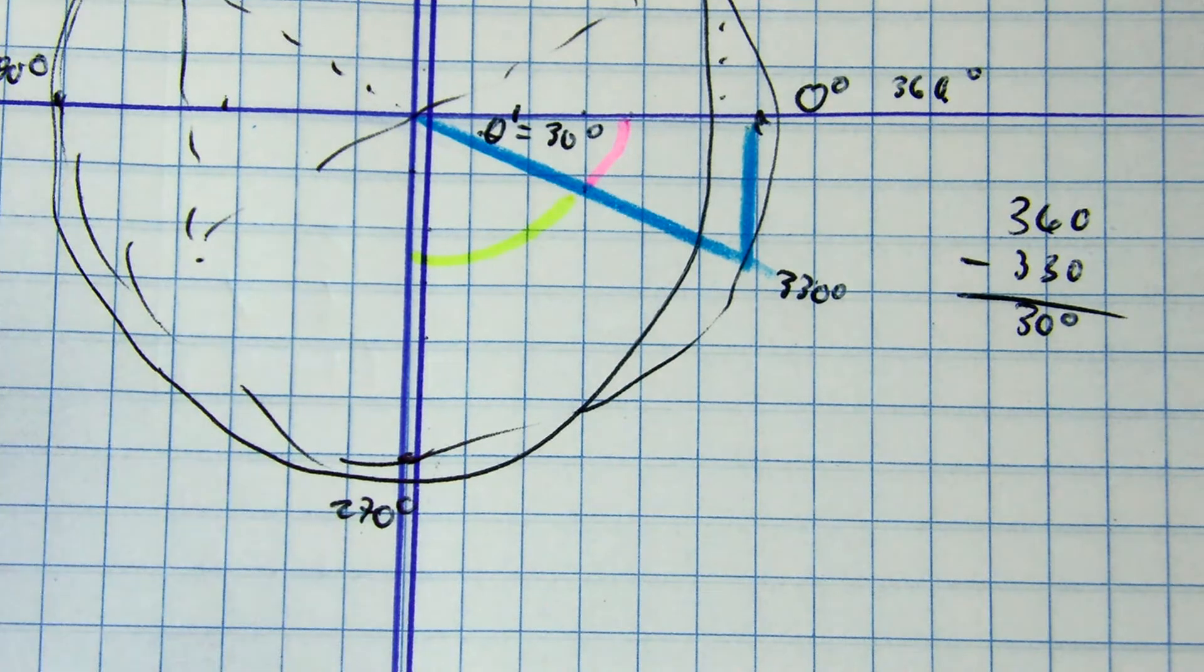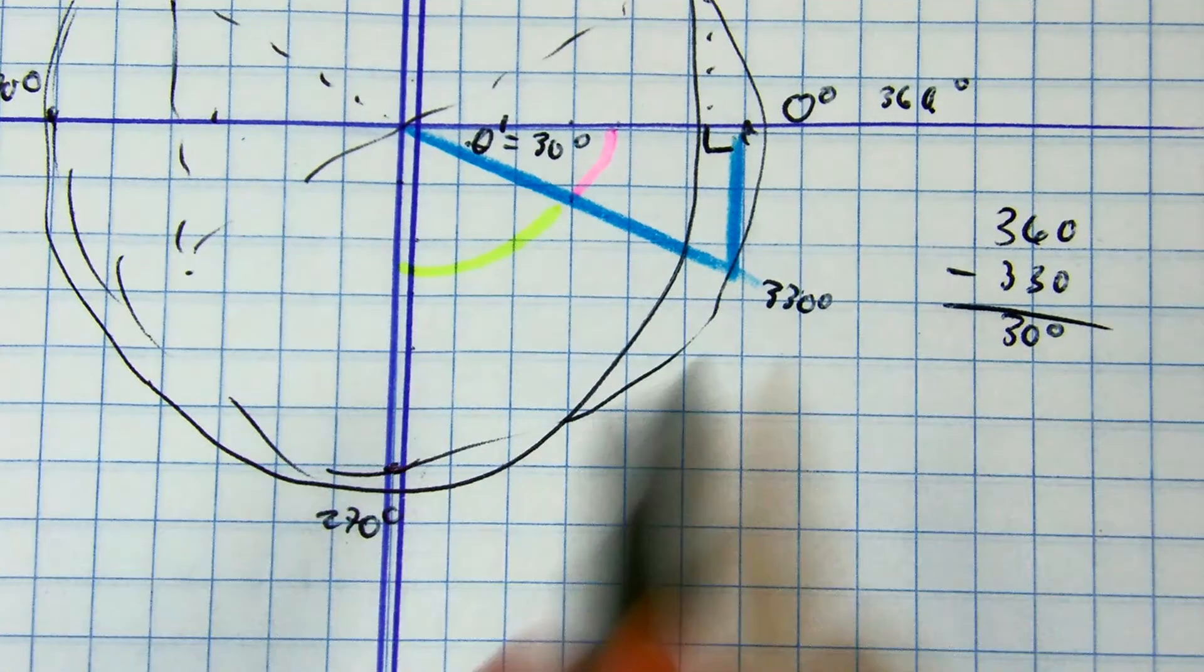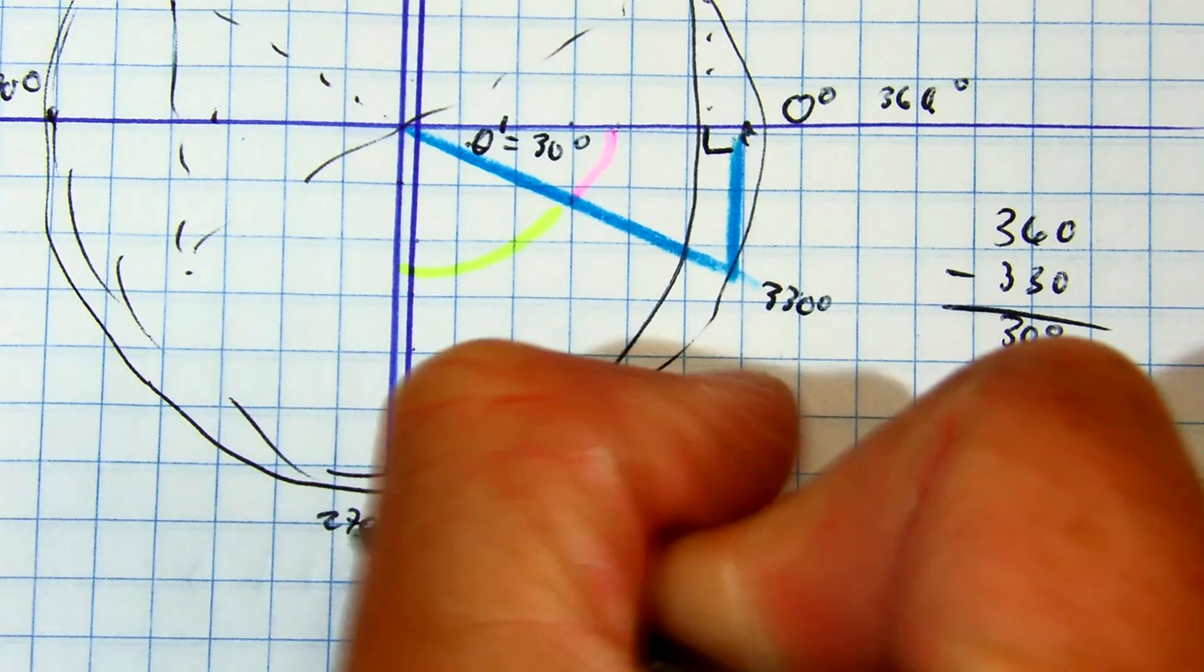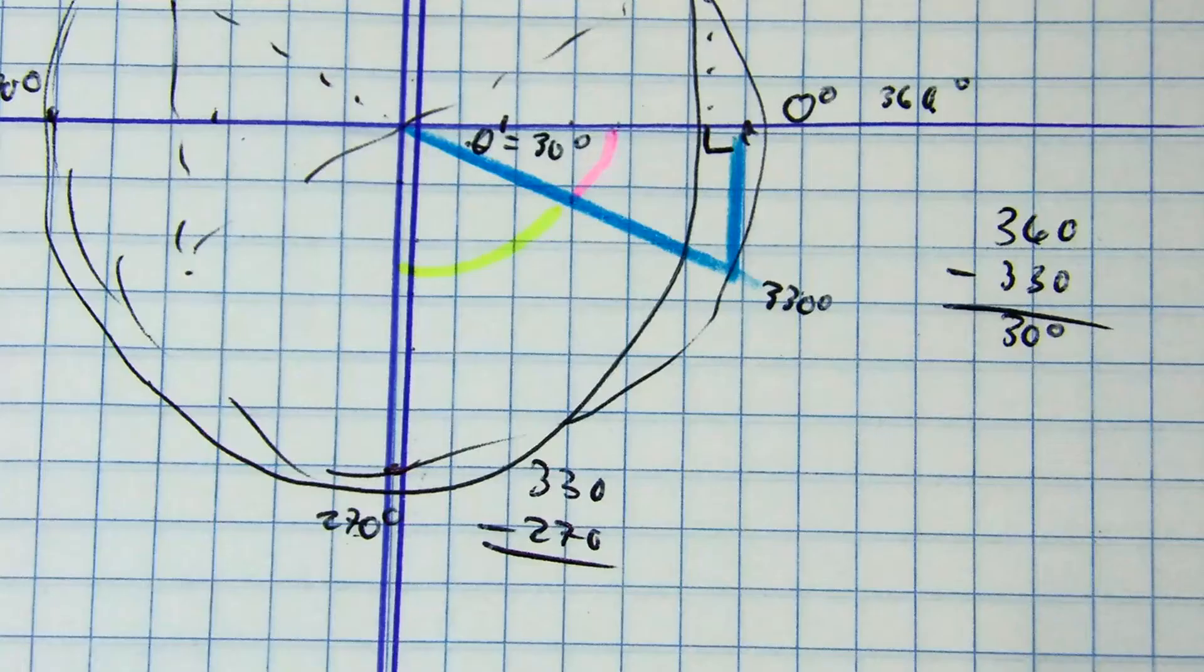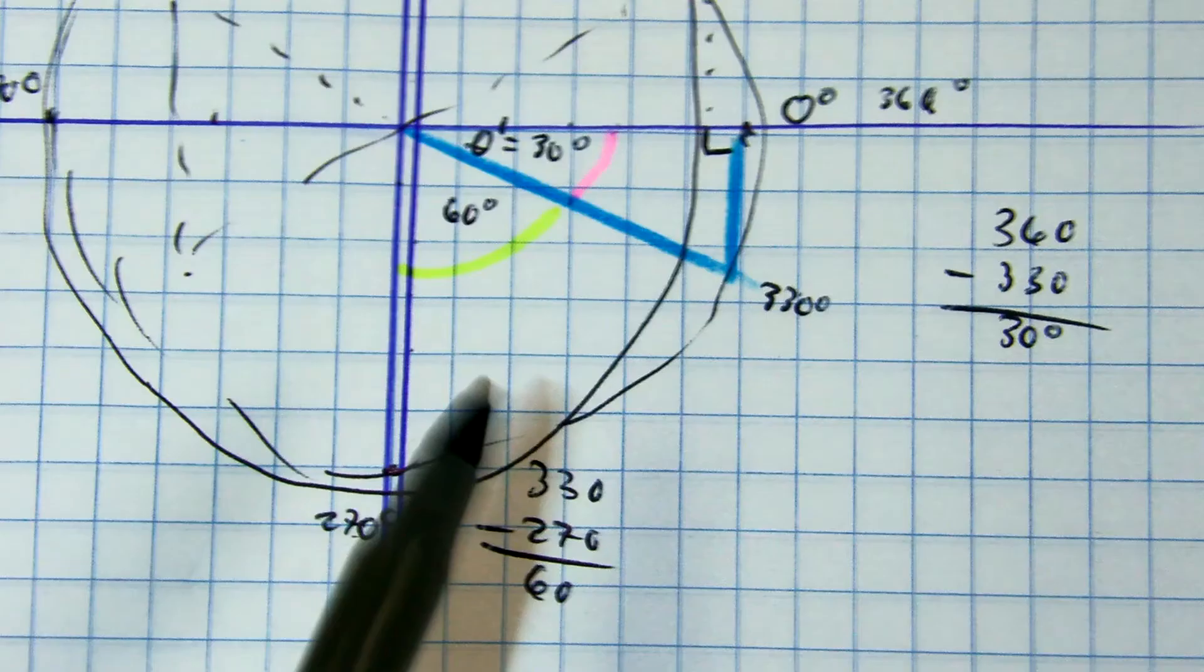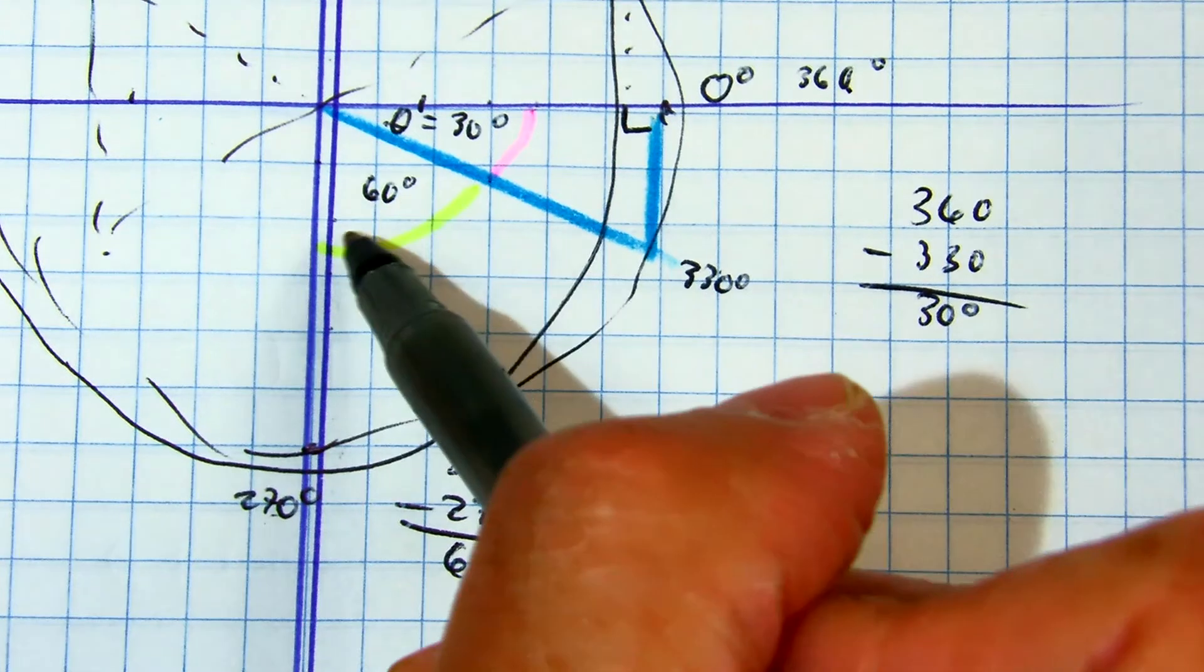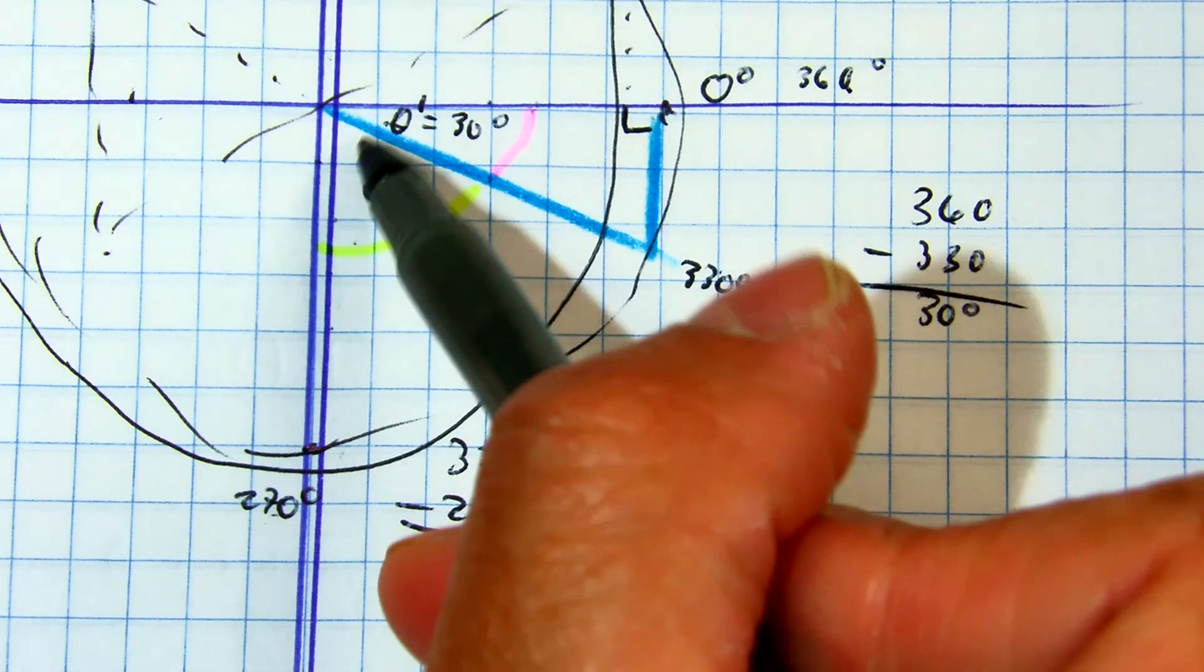Now, let's say you went the other direction. 330 minus 270, how much? 60. This angle would be 60. So you essentially just need to get the complementary angle. 60 plus something equals 90, that would be 30.